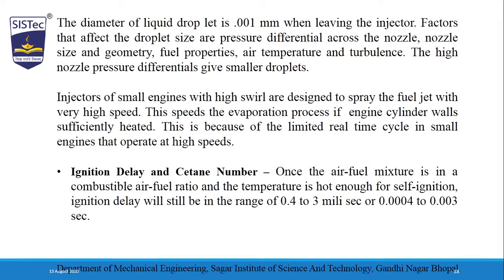Good morning students. We understand the concept of ignition delay and why it is affected by the CTN number. Once the air-fuel mixture is in a combustible ratio — the stoichiometric or chemically correct air-fuel ratio, not too lean and not too rich — flame development and propagation rate happen quickly. The self-ignition temperature stabilizes the flame. The ignition delay occurs in the range of approximately 0.4 to 3 milliseconds.